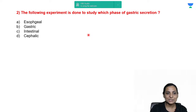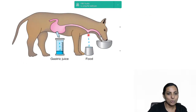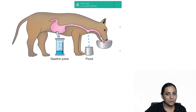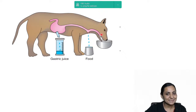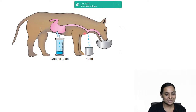There is no esophageal phase — there are three phases: cephalic, gastric, and intestinal. The correct answer is D, cephalic. This experiment is called sham feeding. The dog is given food but the food is not allowed to enter the stomach due to the esophageal fistula. This indicates that even the taste, smell, or sight of food brings about gastric secretion. Remember that the cephalic phase is mainly neural — its regulation is mainly neural.